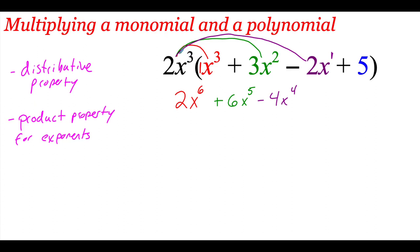Lastly I need to take that 2x cubed and multiply it to the 5. So 2 times 5 is 10. And this 5 doesn't have any x's on it, so I don't have any extra powers to add to that x cubed — it's just going to stay as an x cubed. So when we distribute in that 2x cubed, our final answer is 2x to the 6th plus 6x to the 5th minus 4x to the 4th plus 10x cubed.